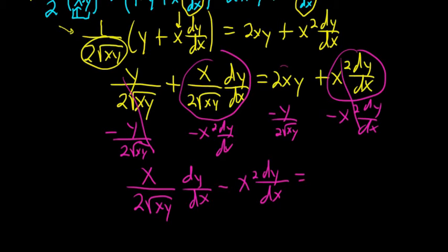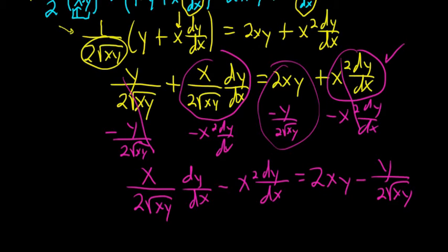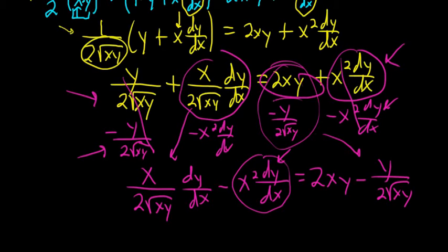Then on the right-hand side we have all of this stuff here: 2xy minus y over 2 square root xy. It went really fast. Let me make sure I did it right. So we subtracted this, and so that's here. Okay, so that looks okay. And then this is still here. And then we subtracted this, and so that's here. Okay, so it's 2xy minus that. So far so good.